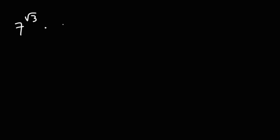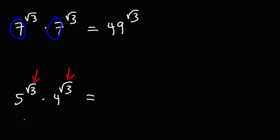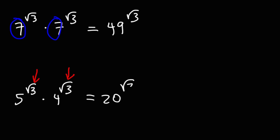For the practice problems: in the first case the exponents are the same, so we just multiply the bases — 7 times 7 is 49, giving 49^√3. In the second case the exponents are again the same, even though the bases are different, so this is 5 times 4 which is 20, giving 20^√3.